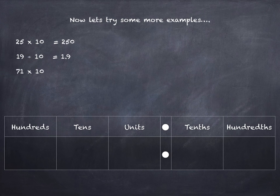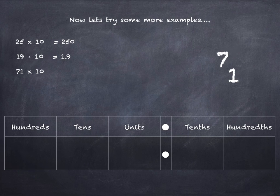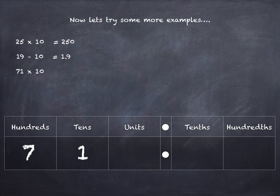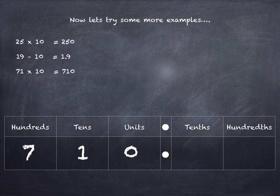71 times 10. There's the 7 and 1 into the tens and units columns. Times 10, going to the left — one place each to the left. Zero placeholder. 71 times 10 is 710.